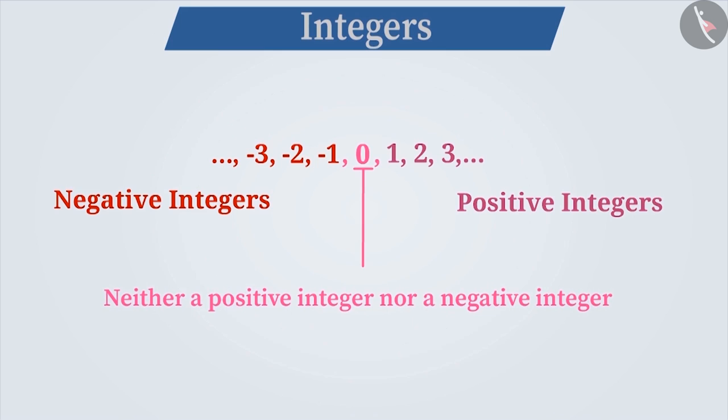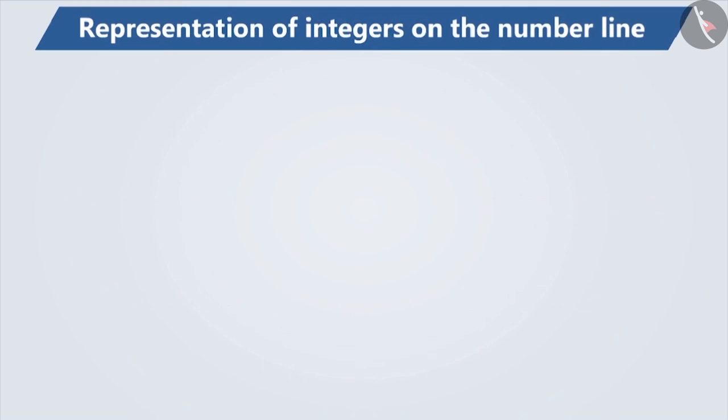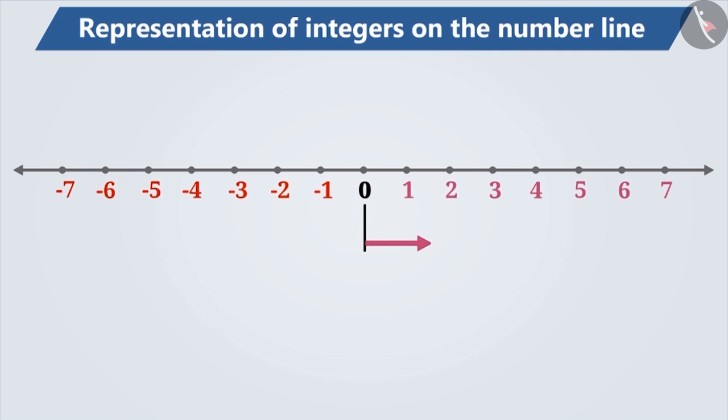For correct understanding of integers, we use the number line. To draw a number line of integers, first draw a line and then mark points at equal distance. Of these points, we mark one of them as 0 and mark positive integers to the right of it and negative integers to the left of it.